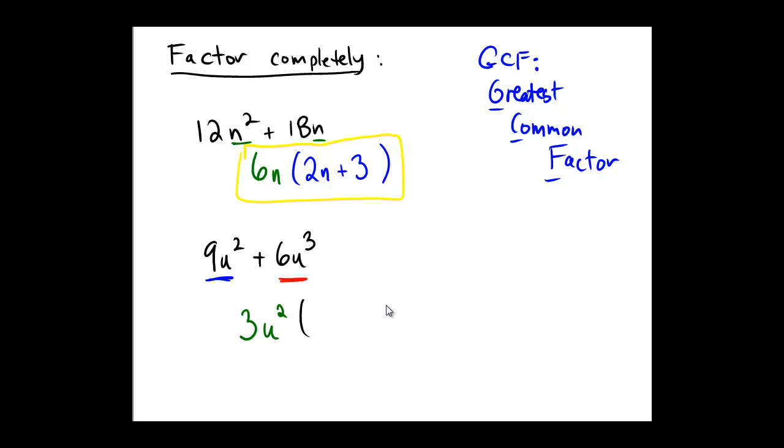Okay, what remains inside of the parentheses after this? Well, on the blue term, we had a 9, we pulled out 3, so we're left with 3, and we had u squared, and we pulled out u squared. So there are no more numerical parts left over. There is a plus sign separating the two. And then in red, from the 6, we pulled out 3. 6 divided by 3 yields 2. And we had 3 copies of u, and we only pulled out 2, so therefore we would be left with one single copy of u.